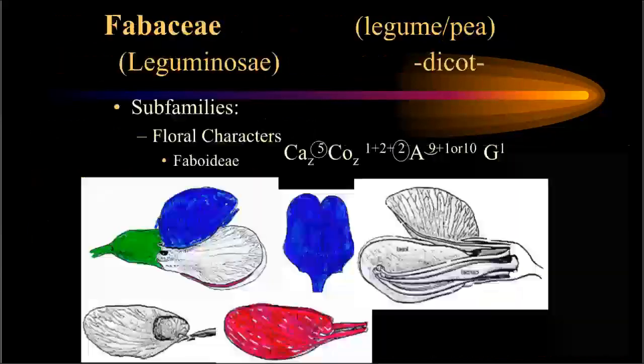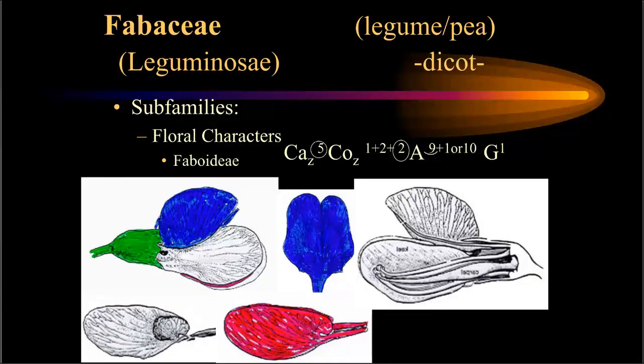When we look at taxonomy — the naming of plants — 'taxon' means the name of and 'onomy' means the science of naming. Most taxonomy is based on the flower parts, as shown in this second slide.